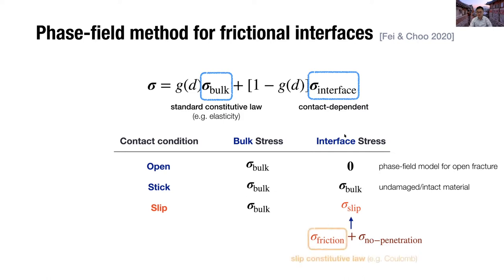And here, sigma friction can be calculated by a standard slip constitutive law, such as the Coulomb law. Whereas the sigma no penetration is compatible with the bulk stress, such that the no penetration constraint can be satisfied.